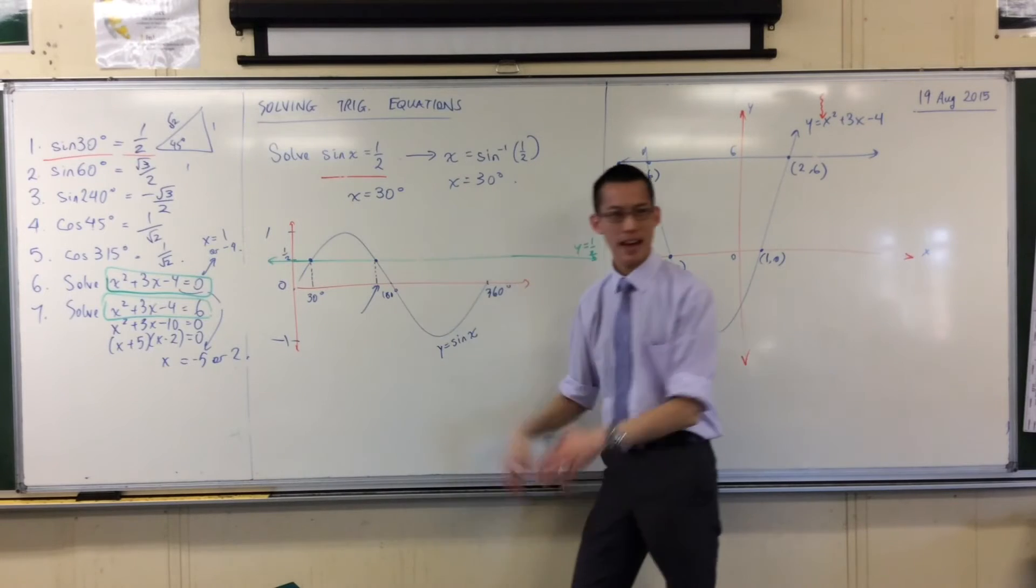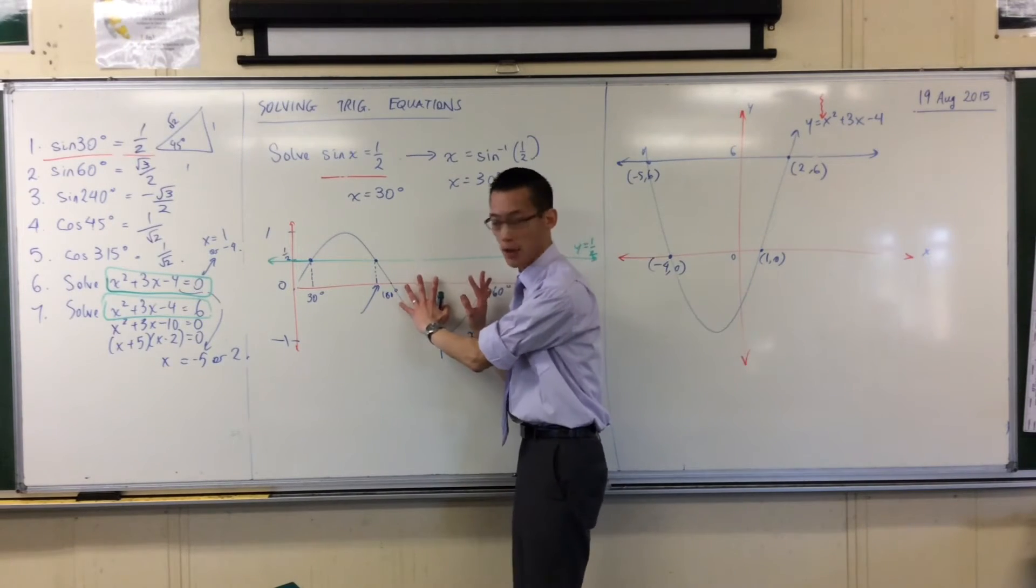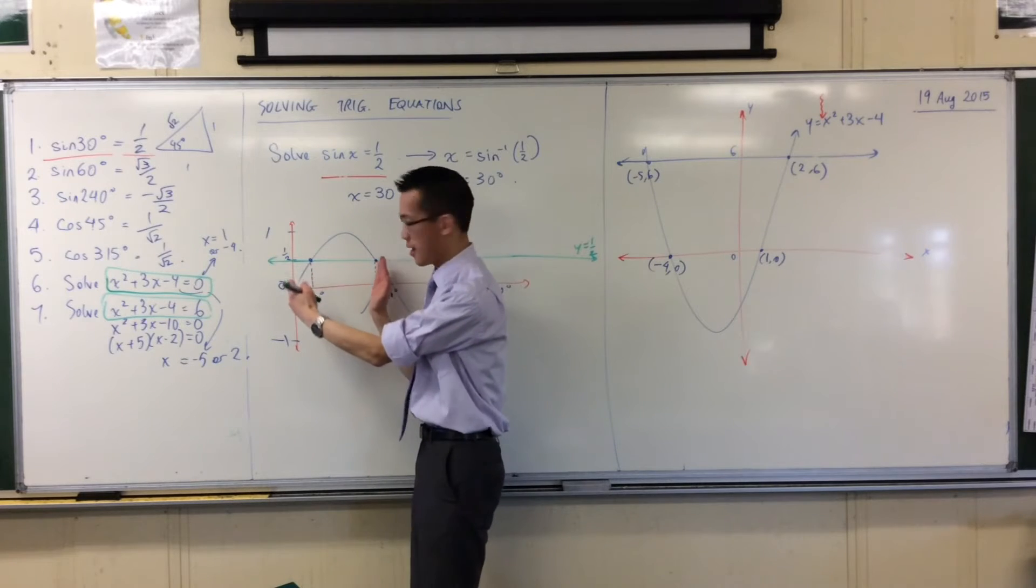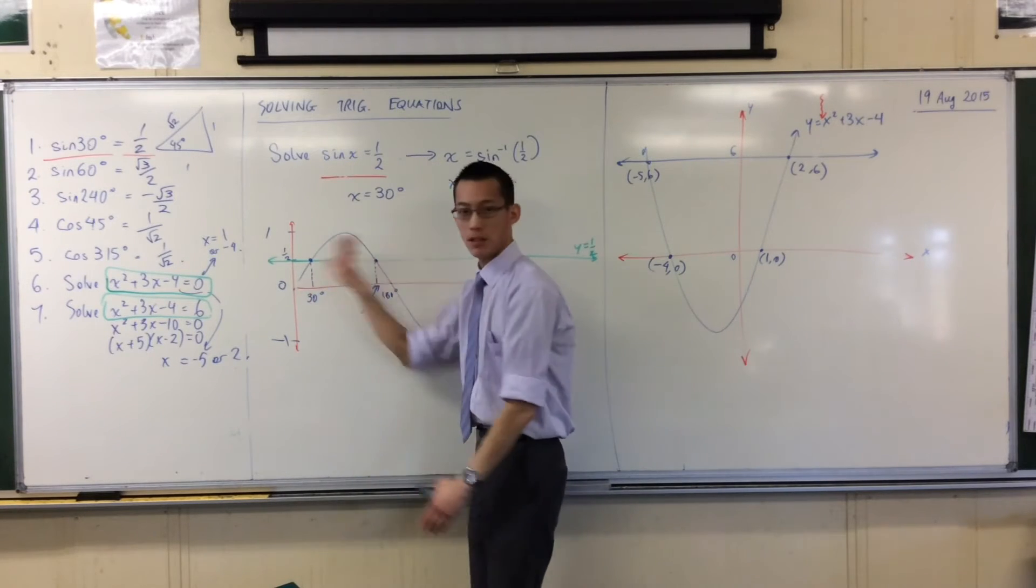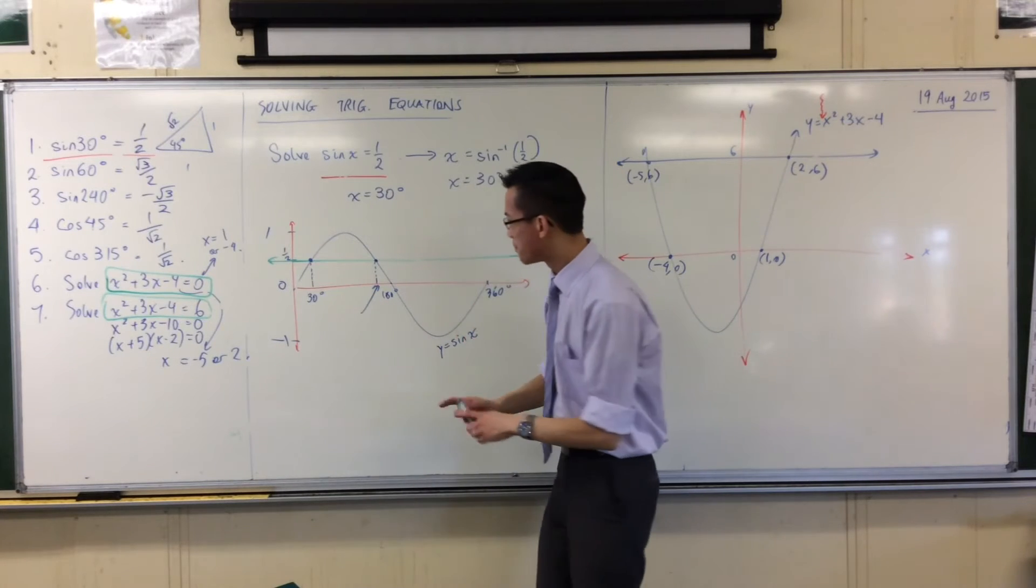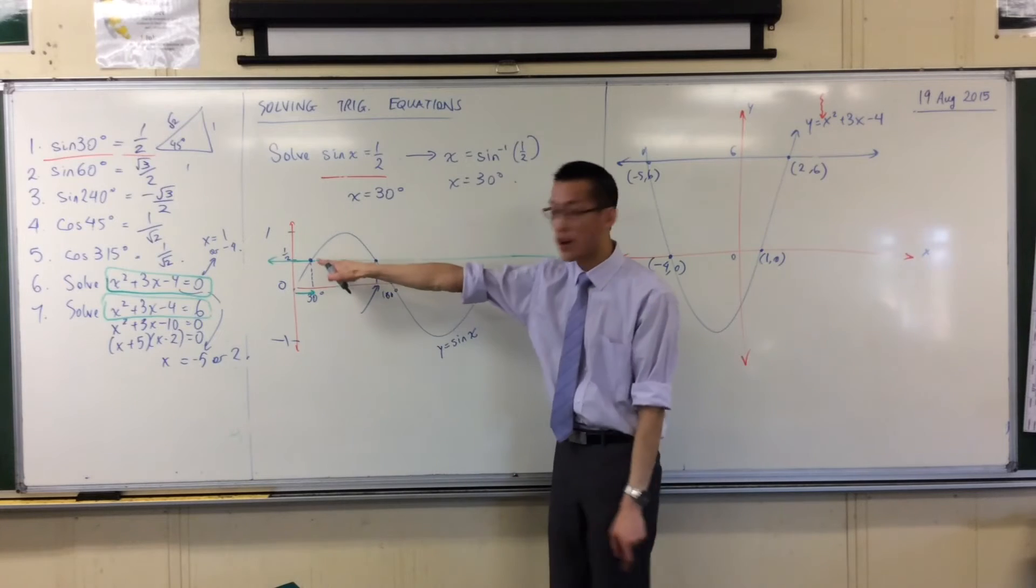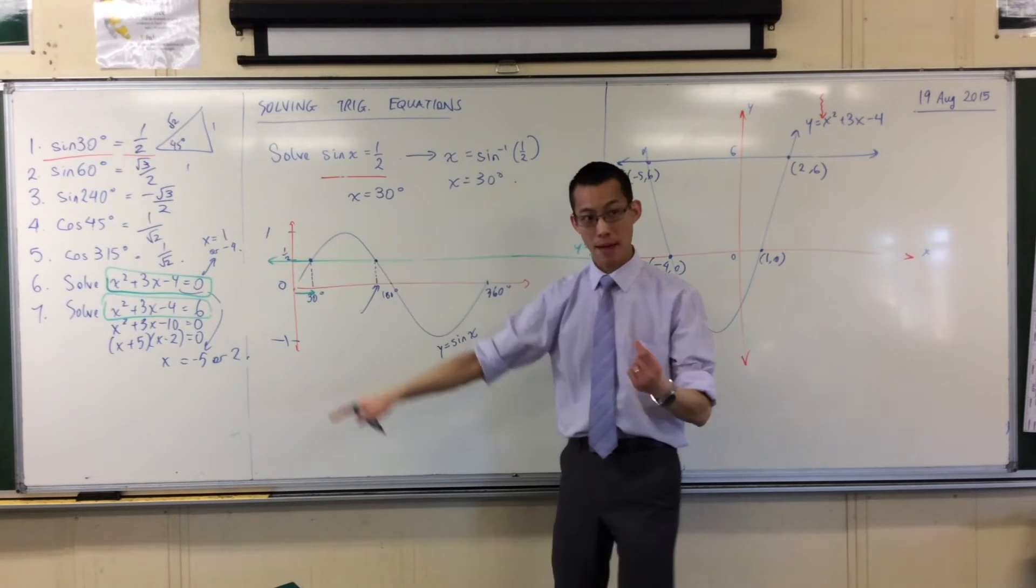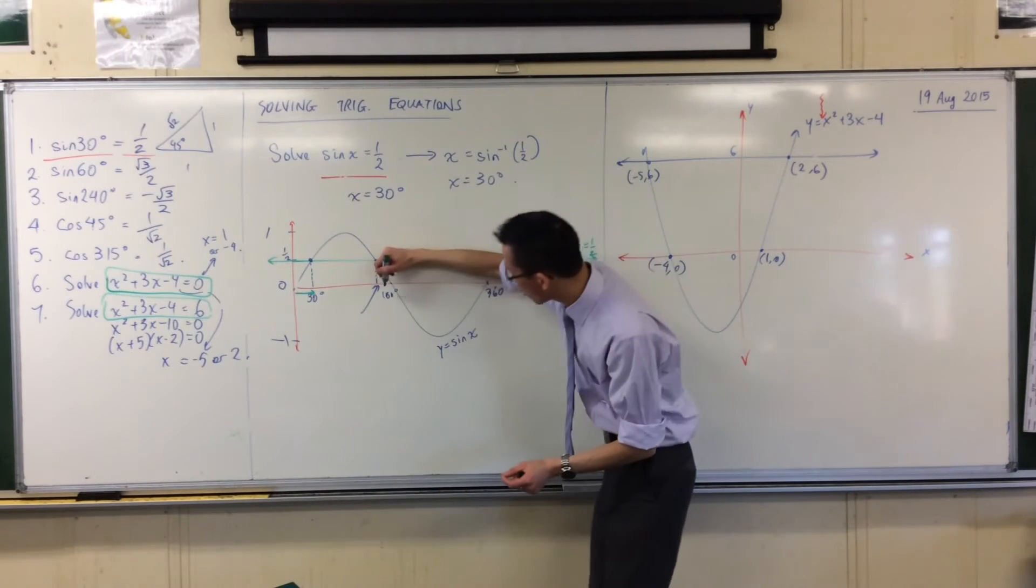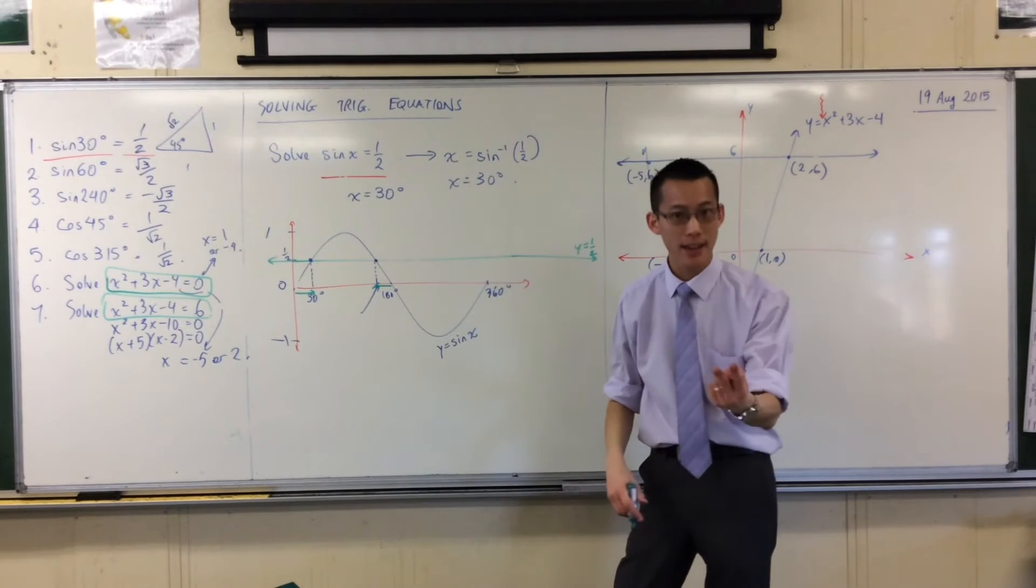Remember, this graph, it has all of these symmetrical properties about it. In fact, if I cover up this part over here, you can see that this part, if I drew a line down the middle, is just a mirror image of itself. So therefore, if I went 30 degrees this way to get my first answer, it makes sense to think I should go 30 degrees this way to get my second answer.